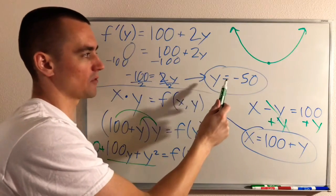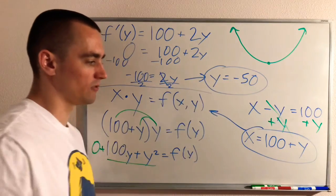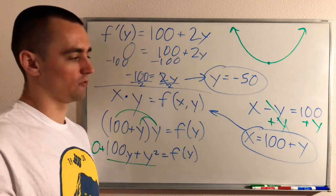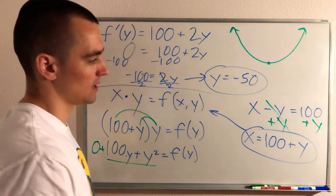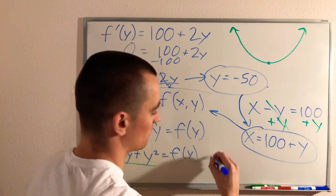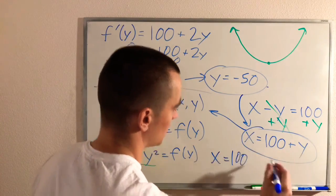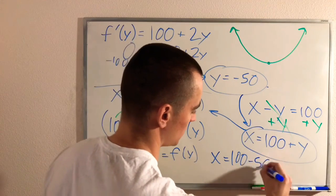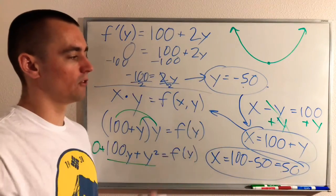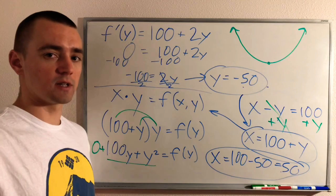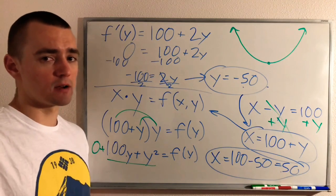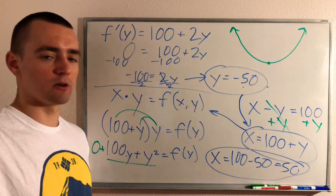We've found that the minimum occurs at y = -50. But we need two numbers, so we plug y = -50 back into our equation for x: x = 100 + (-50) = 50. So x = 50 and y = -50 are two numbers whose difference is 100 and whose product is a minimum. Be sure to subscribe and hit the bell icon — I'll have lots more optimization problems this week, so check back for those!